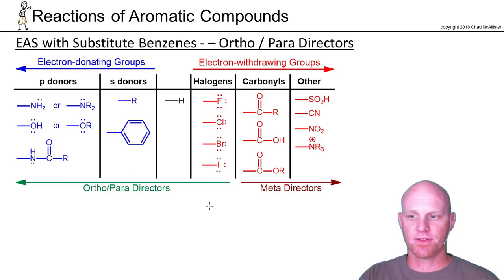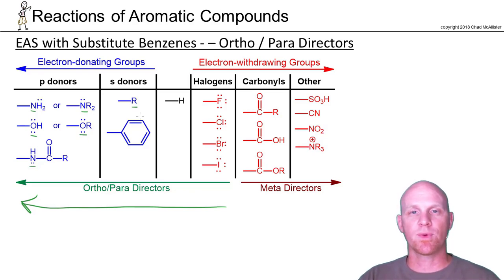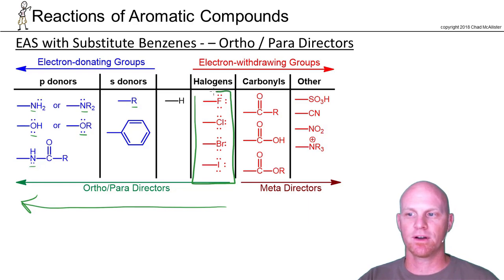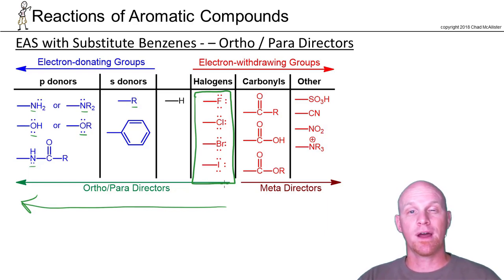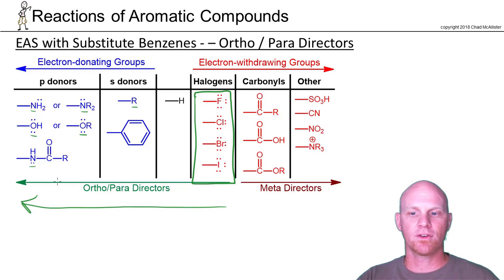Looking back at the ortho-para directors — it's either an oxygen or a nitrogen with a lone pair, or just an R group. For the R group, when we add ortho or para, the carbocation resonance structures will be tertiary instead of secondary — that's where the stabilization occurs. The halogens are the big exceptions on the table. Even though halogens are electron withdrawing, they're still ortho-para directors. They're electronegative so inductively they're withdrawing, but because they have lone pairs they can donate by resonance. They're more withdrawing than donating overall, but they only get a chance to donate by resonance when going ortho or para — same as nitrogen and oxygen — which makes them ortho-para directors. So halogens react slower than plain benzene but are still ortho-para directors. Outside of halogens, all electron donating groups are ortho-para directors, and all other electron withdrawing groups are meta-directors.